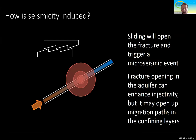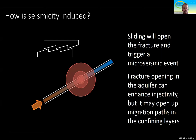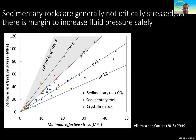But we want to avoid microseismicity occurring in the caprock, because we may create a migration path through which CO2 could leak. So we have seen that there are three factors controlling induced seismicity: stress state, overpressure, and cooling. Now let's take a look at how they appear in CO2 storage.